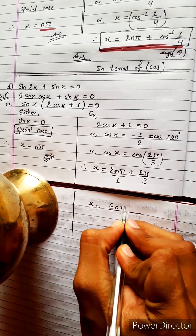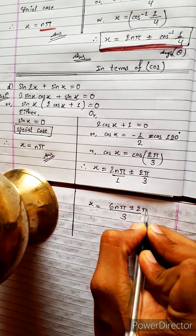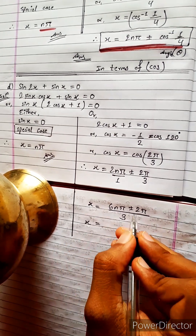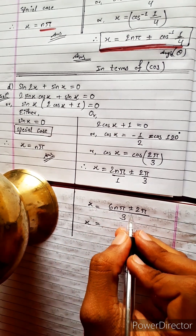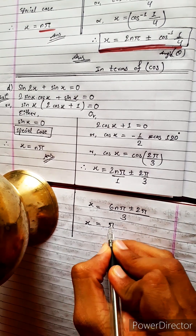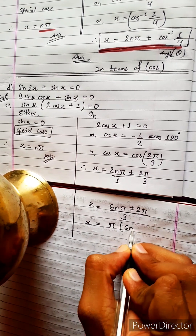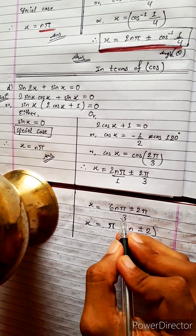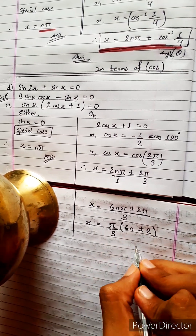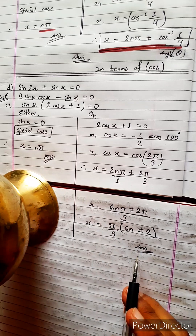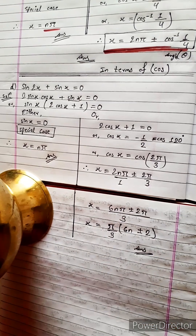So we get 6nπ plus or minus 2π. Dividing through, the two answers are in terms of pi: 6n plus or minus 2 divided by 3. That's your first answer and second answer. Very easy, super easy. Time to do the next question.